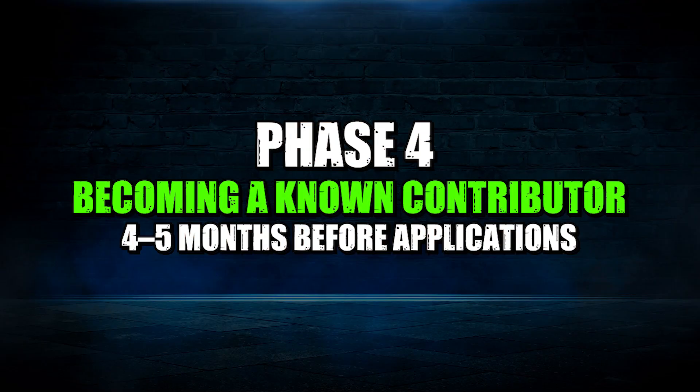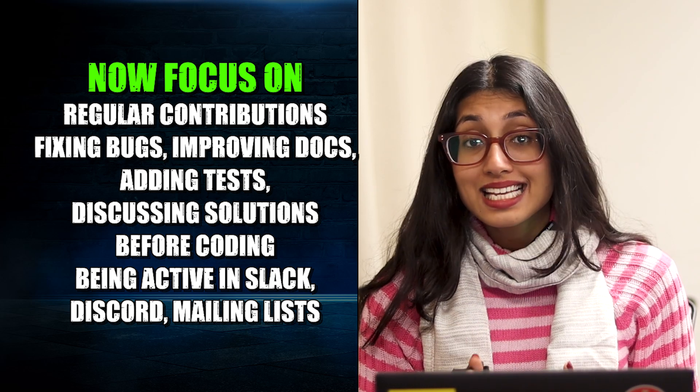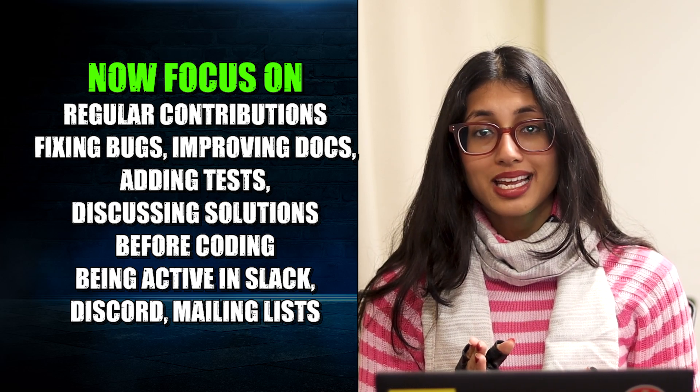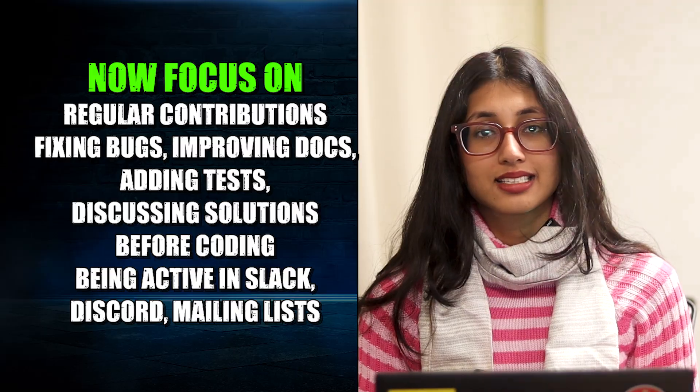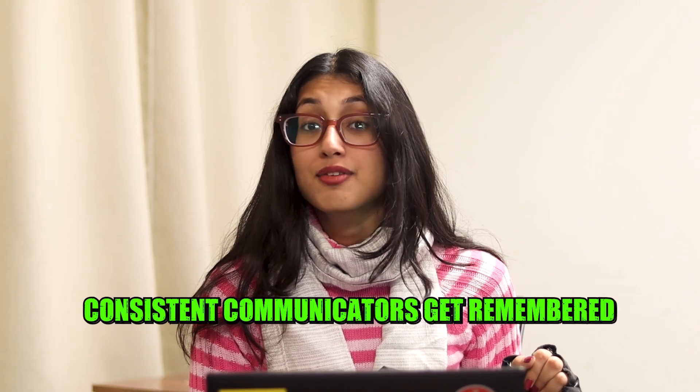Take days for something small — and that's not failure, that's how open source trains you. Phase four is four to five months before the applications. At this stage, something changes: you're no longer trying to enter open source, you're already part of a project. Now you must focus on regular contributions — fixing bugs, improving docs, adding tests, discussing solutions before coding, and being active in Slack, Discord, and mailing lists. This phase is critical because mentors don't pick resumes, they pick people they recognize. Silent contributors get ignored; consistent communicators get remembered.